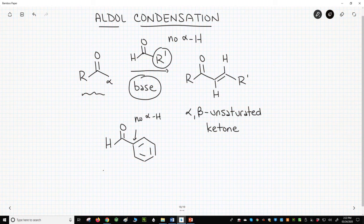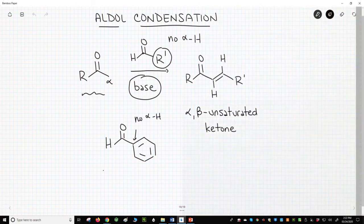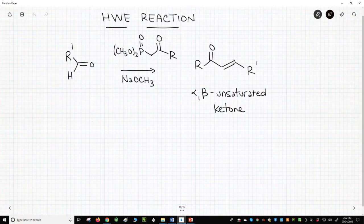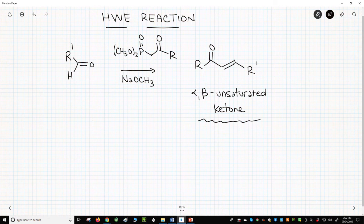How does the Horner-Wadsworth-Emmons fix this limitation? Here is a Horner-Wadsworth-Emmons reaction. Notice that it can also make an alpha-beta unsaturated ketone, just like the aldol condensation. Unlike the aldol condensation, the aldehyde can be almost anything.